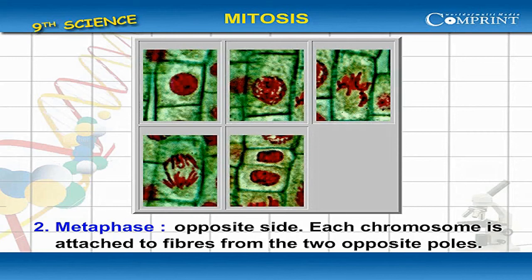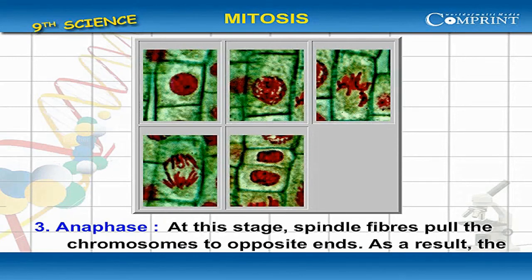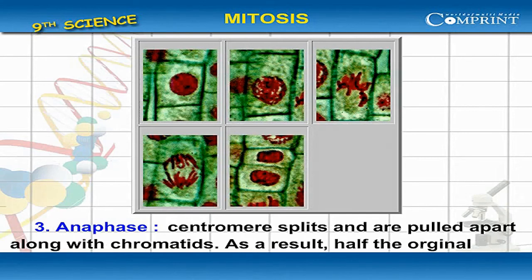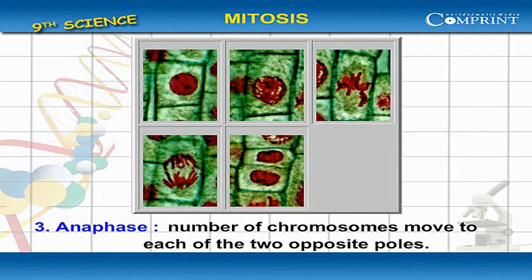Anaphase. Each chromosome is attached to fibers from the two opposite poles. At this stage, spindle fibers pull the chromosomes to opposite ends. As a result, the centromere splits and the chromatids are pulled apart. As a result, half the original number of chromosomes move to each of the two opposite poles.